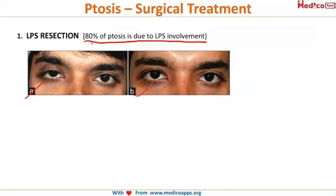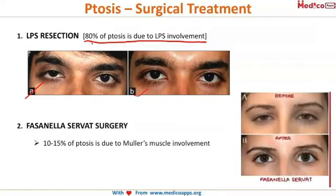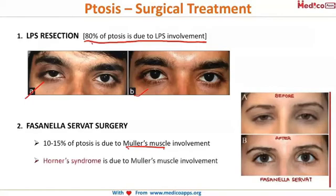The second type of surgery is the Fasanella-Servat surgery. The remaining 10 to 15 percent of ptosis cases occurring due to Muller's muscle involvement are treated with Fasanella-Servat. Horner's syndrome is also treated with Fasanella-Servat because it also involves the Muller's muscle. Fasanella-Servat is used whenever the Muller's muscle is involved.